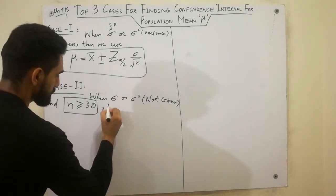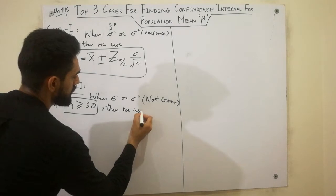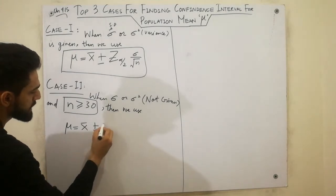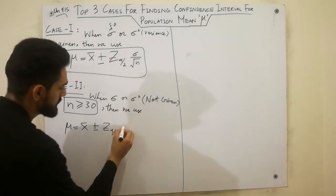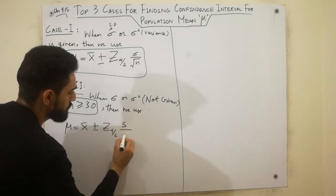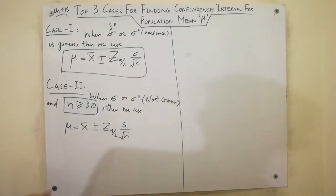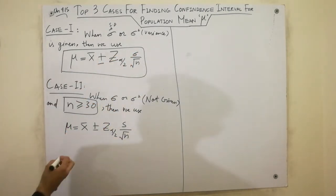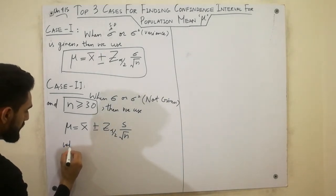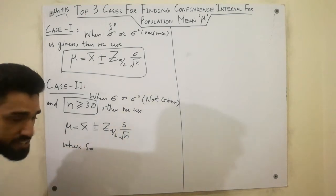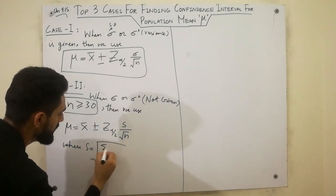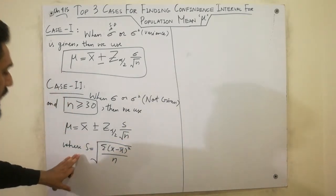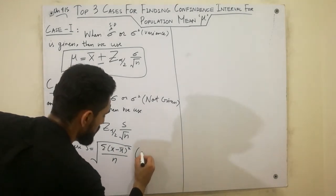Then we use the formula: mu equals X bar plus minus Z alpha by 2, times s divided by square root of n. Here, instead of Sigma we use s. What is s? s is the standard deviation, calculated as the square root of the sum of (x minus x bar) squared, divided by n. This is the biased standard deviation.